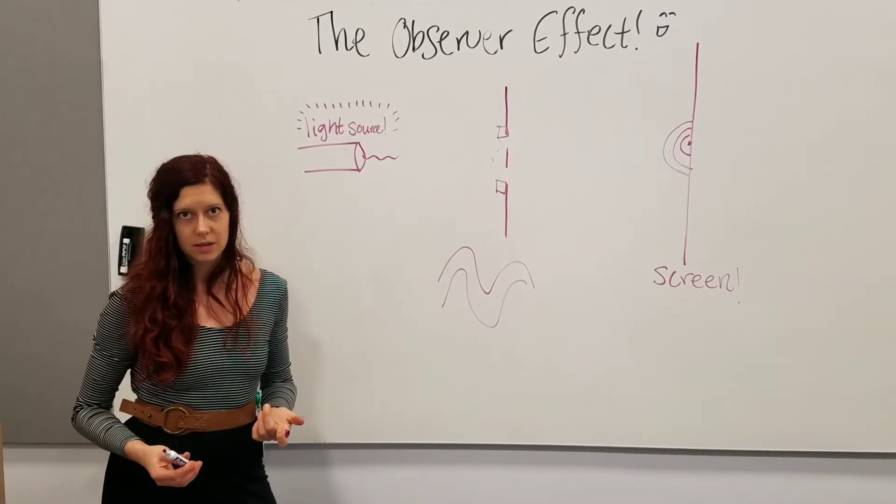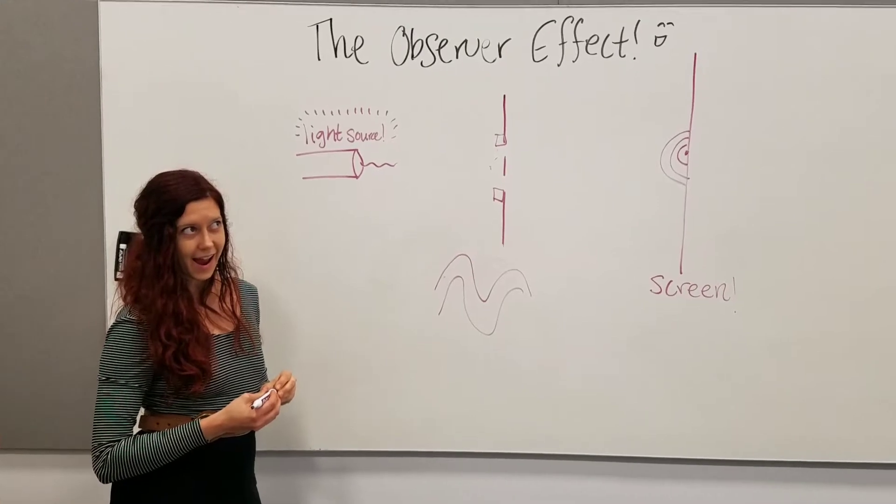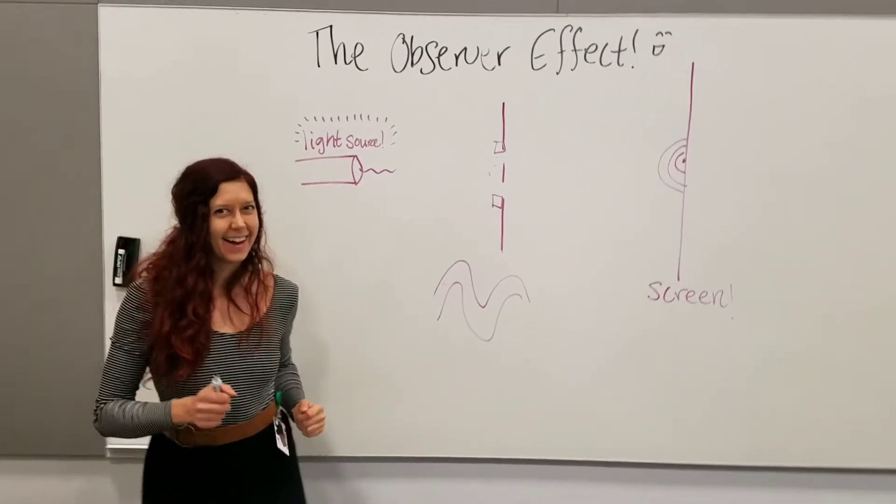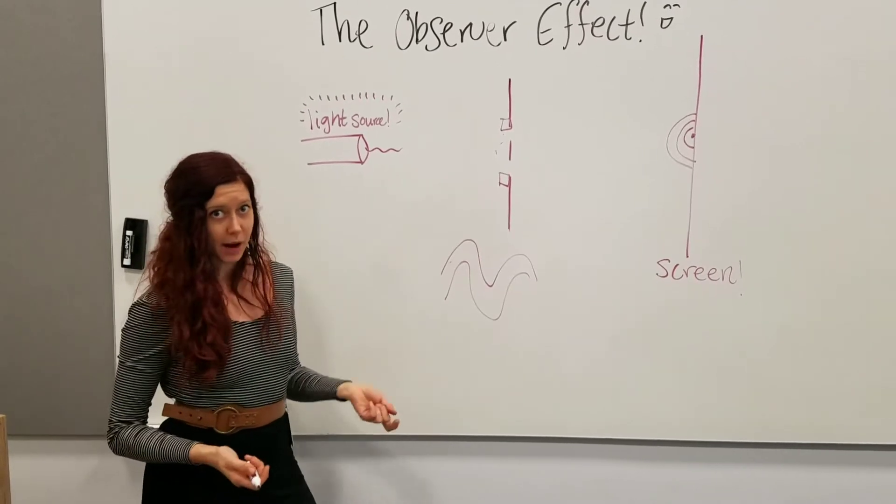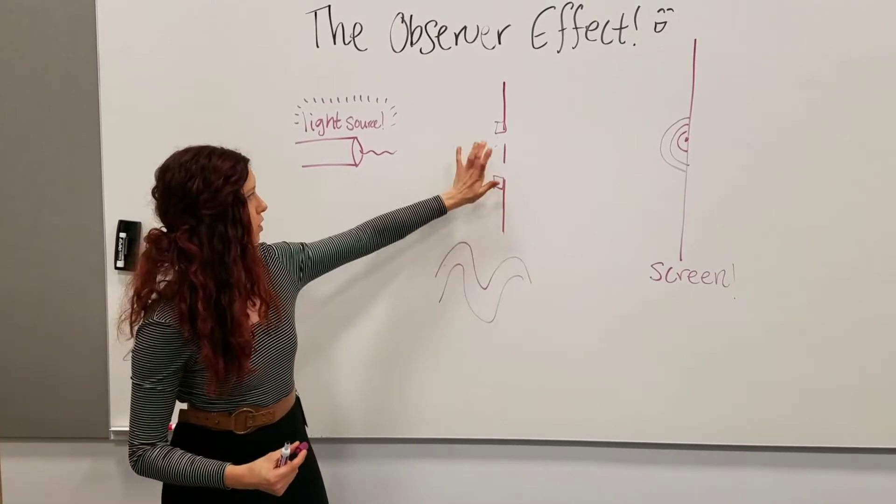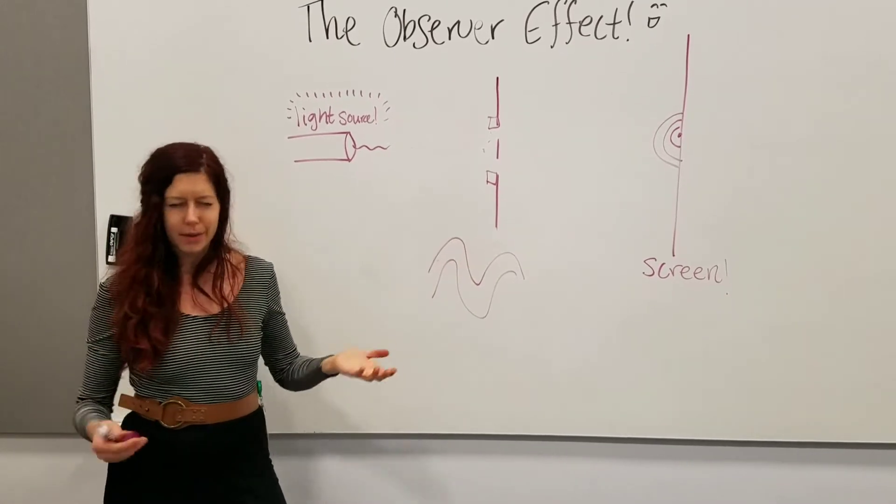What you would expect, well, I'll let you think about that for a sec. Cool. So you would probably expect that half of the time the photons would go through this one, and half of the time the photons would go through that one, right? Probability. No problem.